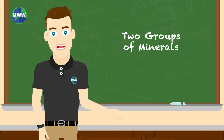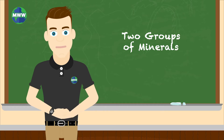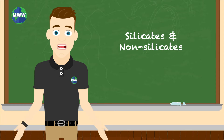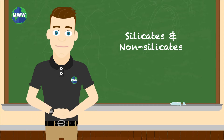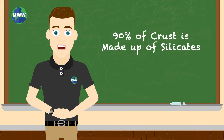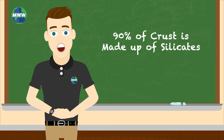Minerals are usually divided into two groups: silicates and non-silicates. Silicates are minerals that contain silicon and oxygen. 90% of Earth's crust is made up of silicates.